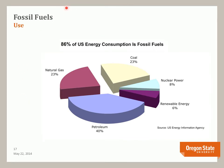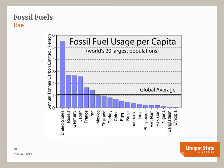We use fossil fuels for a lot of different things. Eighty-six percent of our energy consumption — this is for 2012 — is from fossil fuels. Coal accounts for 23%, natural gas 23%, petroleum 40%, and renewables and nuclear power total only 14%. We are very reliant on fossil fuels for our energy consumption.